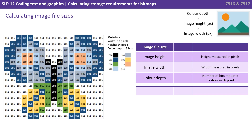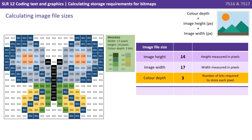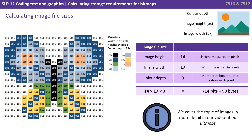Let's take our example of a butterfly that we used in the previous video. The image height is 14 pixels, the image width is 17 pixels, and the colour depth is 3, because each pixel is being represented by a sequence of three bits. 14 times 17 times 3 gives 714 bits or 90 bytes.